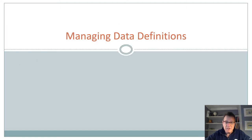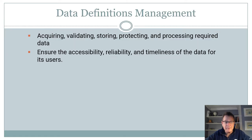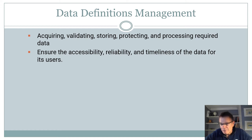Let's talk about data definitions first. This is a very key component within managing an effective analytics operation, and something I talk to people about constantly because it's a constant area of neglect when rolling out an effective analytics program. A data definition is basically acquiring, validating, storing, protecting, and processing required data. It ensures accessibility, reliability, and timeliness of the data for its users — essentially, how do you know what you are defining, and how can you be sure the data is giving you the information you think it is?